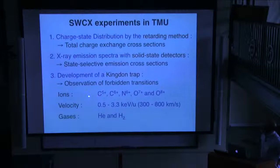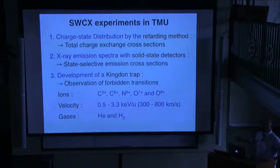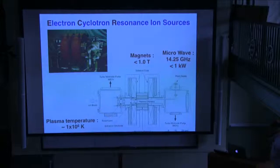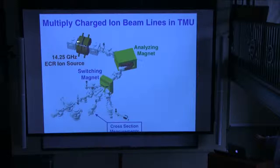Today we talk only about hydrogenic and bare ions. The ion velocity covers the solar wind velocity region and much faster than that. The target is helium and hydrogen molecule. As a next step, I will go to atomic targets — atomic hydrogen should be interesting for all of you. In our laboratory, we have an electron cyclotron resonance ion source. The plasma temperature is about one mega-electron-volt, so we can produce almost every kind of solar wind ion.